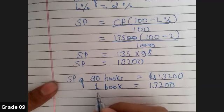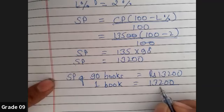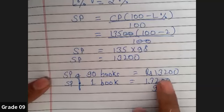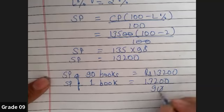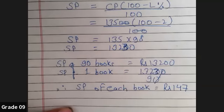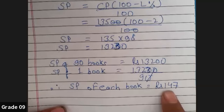Here the question is asking about each, that's why I'm finding for one book. Price of each book is 13,200 divided by 90. What is it? Can one of you help? Okay, in this way she has sold the book at 147 each.